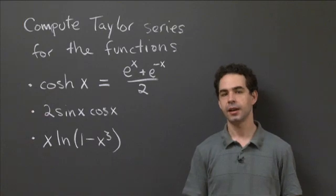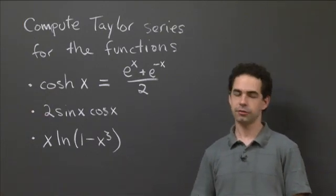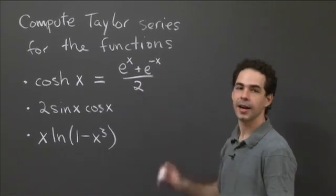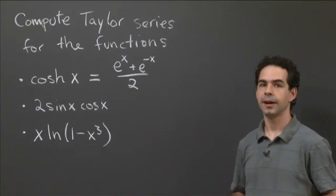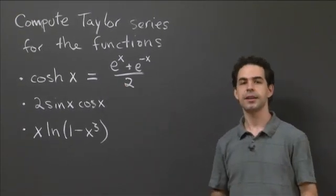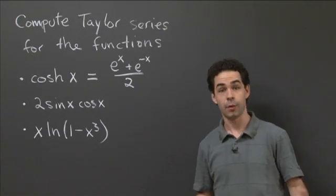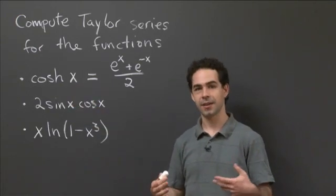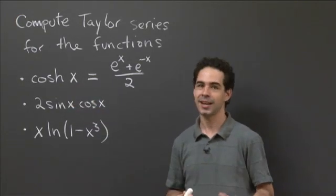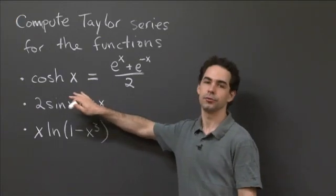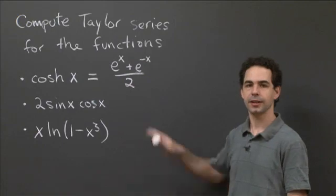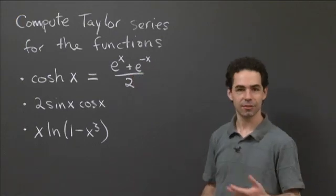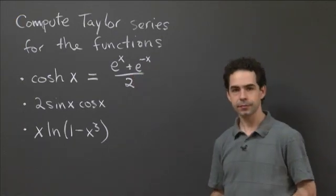So here we have three functions whose Taylor series we're trying to compute. Let's start with the first one. The hyperbolic cosine is given by the formula (e^x + e^(-x)) / 2. There are a couple different ways you could go about this one. The hyperbolic cosine is very susceptible to the method of just using the formula directly, since the derivative of hyperbolic cosine is hyperbolic sine, and the derivative of hyperbolic sine is hyperbolic cosine again. So this function has very easy-to-understand derivatives.